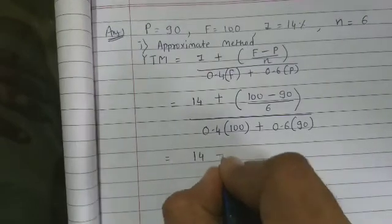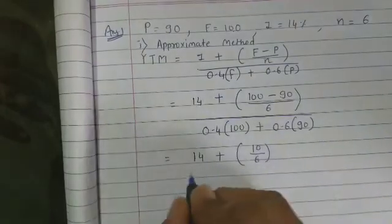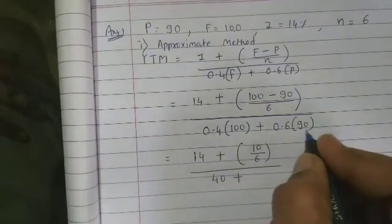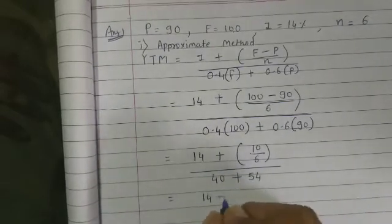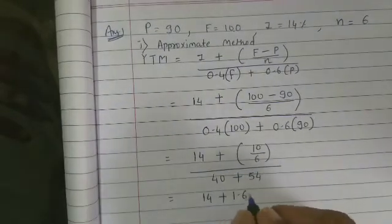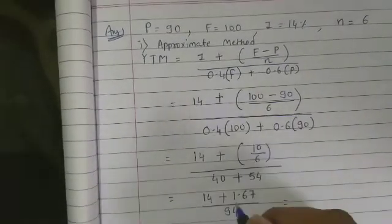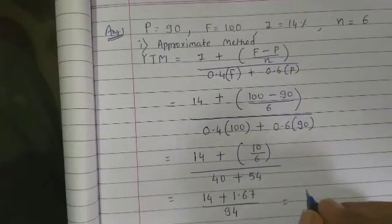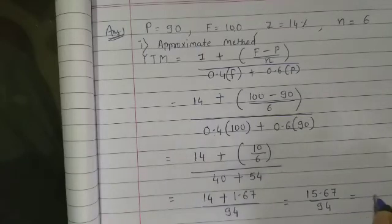So 10 divided by 6 equals 1.67. The denominator is 40 plus 54 equals 94. So the numerator is 14 plus 1.67 equals 15.67. Therefore YTM equals 15.67 divided by 94, which gives approximately 16.67%. So the answer from the approximate method is approximately 16.7%.